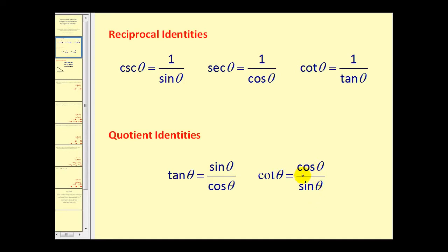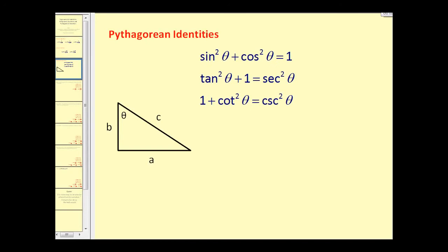We've already discussed these earlier this semester, so we're going to move along to the Pythagorean identities, though we will use the reciprocal and quotient identities in some of the problems later. The three Pythagorean identities are: sine squared theta plus cosine squared theta equals one; tangent squared theta plus one equals secant squared theta; and one plus cotangent squared theta equals cosecant squared theta.